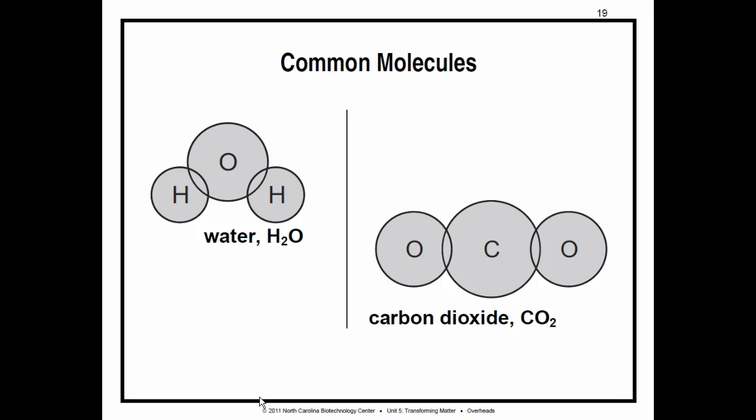So what is a compound? A chemical compound is a substance that's composed of two or more different elements. Just as letters form words when they're combined, elements in combination form compounds.